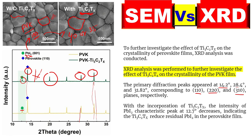This is when you explain the SEM in terms of grain size. After that, you can write: 'To further investigate the effect of this material on the crystallinity of the perovskite film, XRD analysis was conducted.' When writing results and discussion or characterization sections, we have to use simple past tense.